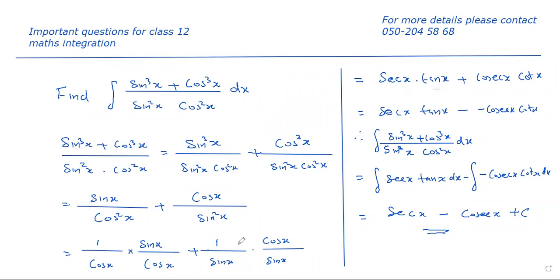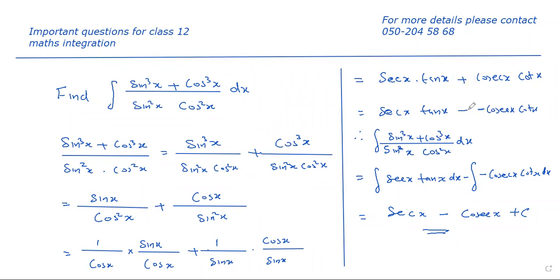We know that the integral of sec x · tan x is sec x, and the integral of cosec x · cot x is −cosec x. So we have to change the sign: two minus signs came together and become plus.